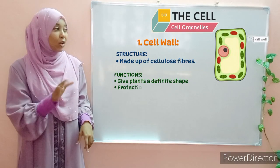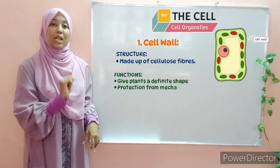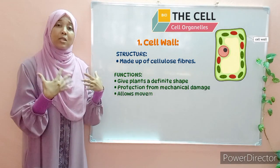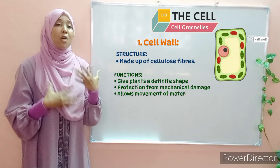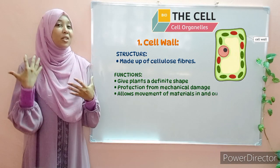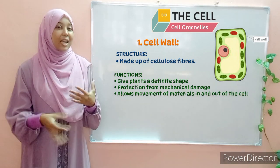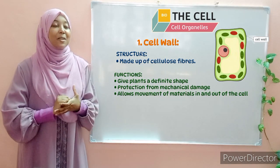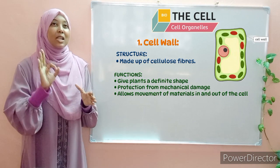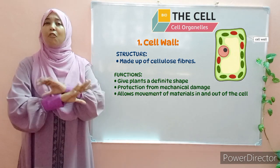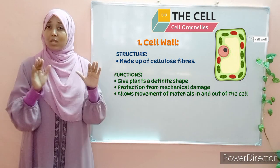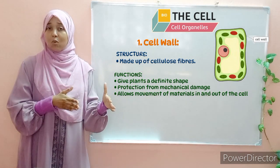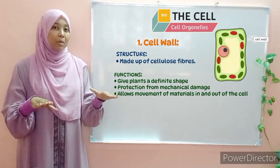Another function of the cell wall is that it protects the inner parts of the plant cells from mechanical damage. Another function of the cell wall is that it is fully permeable. This is actually a characteristic of the cell wall — it's fully permeable.